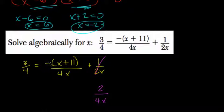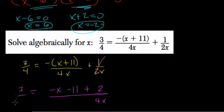And now we can add that to this term over here, which is negative x minus 11. Negative x minus 11 plus 2 all over 4x equals 3 fourths.